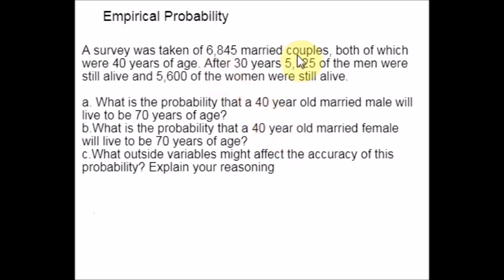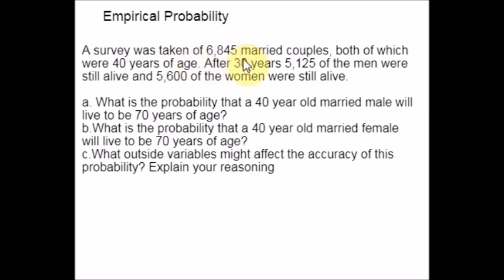Here is the last example. A survey was taken of 6845 married couples, both of whom were 40 years of age. After 30 years, 5125 of the men were still alive and 5600 of the women were still alive. Part A: What is the probability that a 40-year-old married male will live to be 70 years of age?